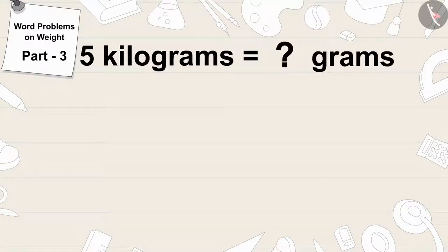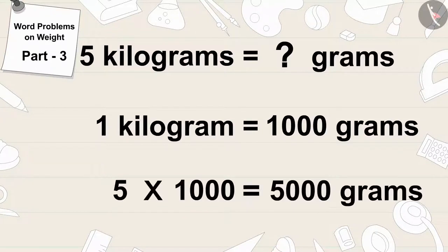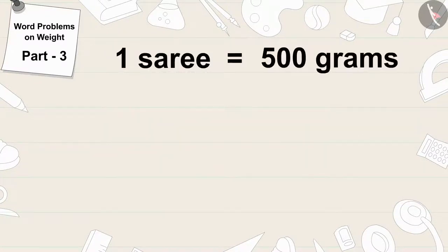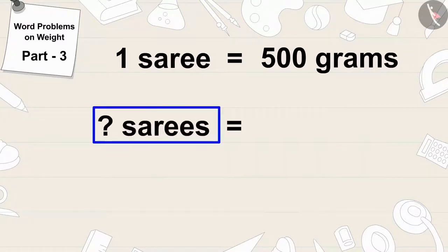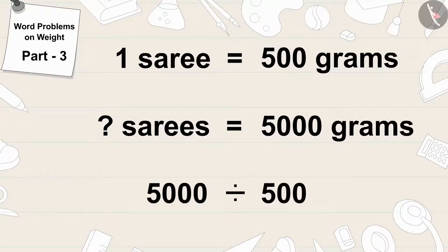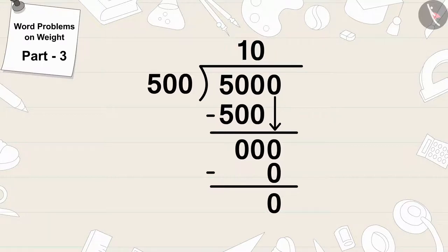First we will write five kilograms in grams. One kilogram is equal to one thousand grams, so five kilograms equals five times one thousand, which is five thousand grams. Now Bano has a sari of 500 grams, so to find out how many saris fit in five thousand grams, we will divide five thousand by five hundred. Five thousand divided by five hundred equals ten.